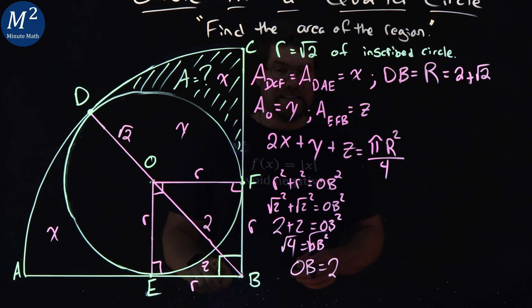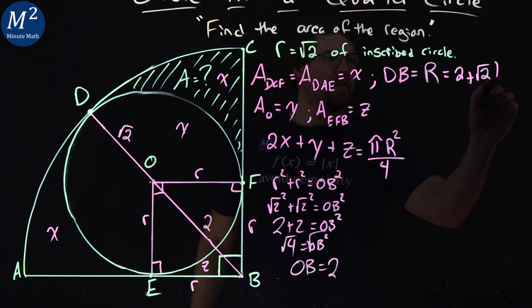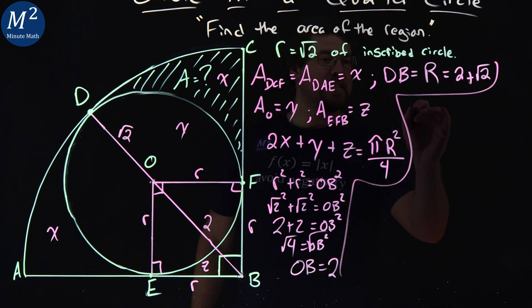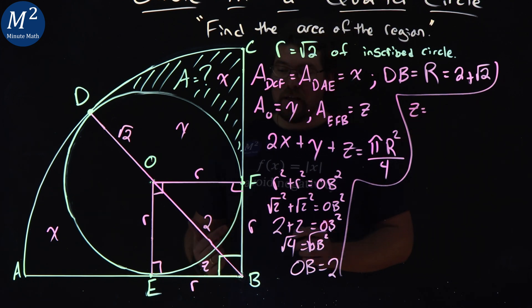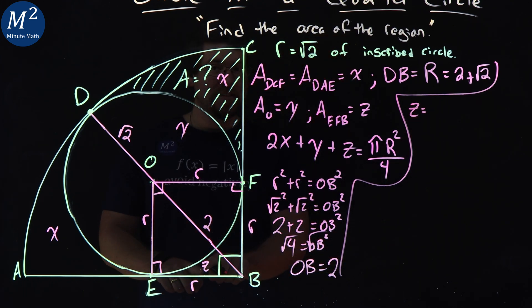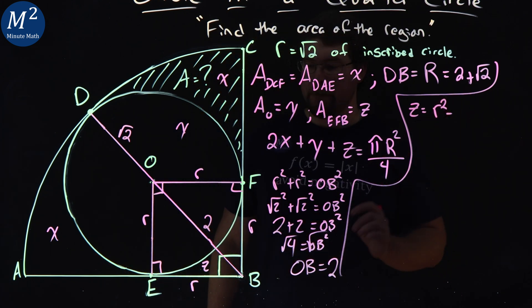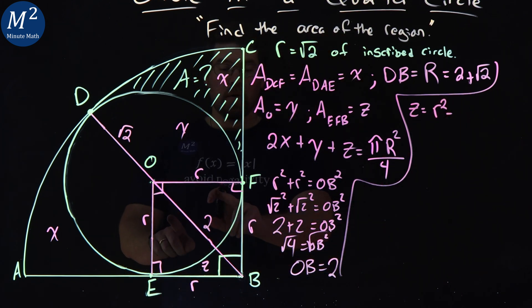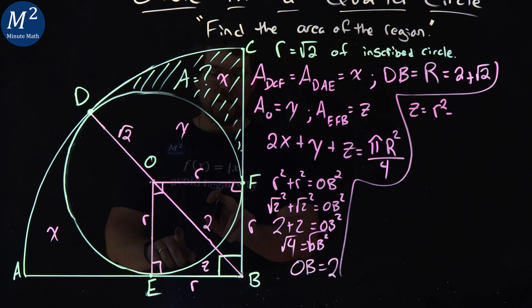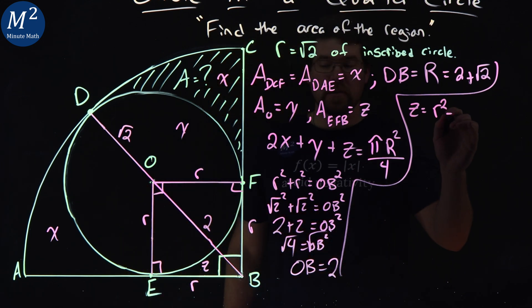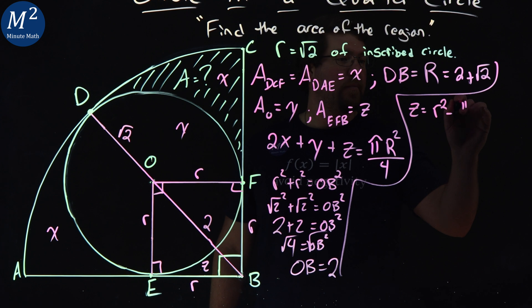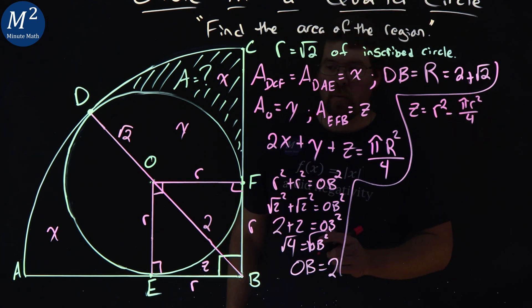Let's find the area of Z. The area here of Z is equal to the area of this square, area of the square, which is R squared, minus the quarter circle, right? So the whole square minus that quarter circle, and the quarter circle is pi R squared over 4. Well, luckily for us, we know what R is, square root of 2.